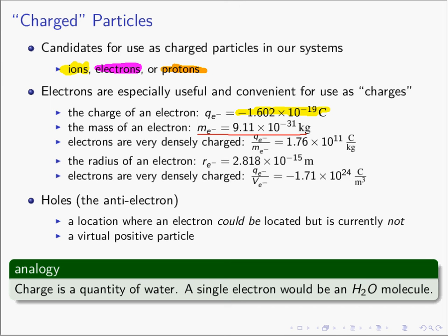Talking about charge, since you can't see electrons or play with them, it helps to have an analogy. Charge is like a quantity of water. If you have so many coulombs of charge, it's like having so many liters of water. A single electron is really the smallest amount of charge we're concerned with — like a single H₂O molecule. If you break H₂O into smaller pieces, it's no longer water; it's hydrogen and oxygen. Take an electron and break it up and it's no longer an electron with that wonderful charge characteristic.